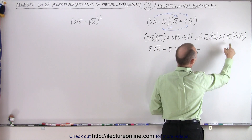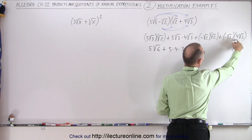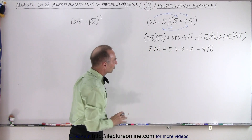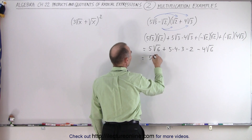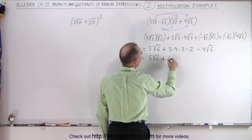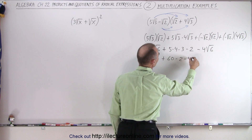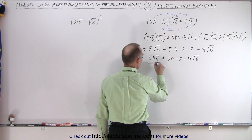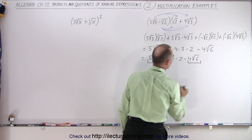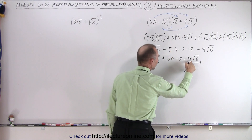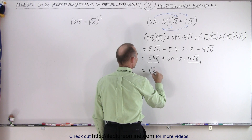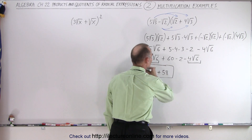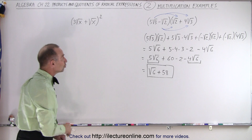And here we have a negative and the square root of two times the square root of three, which is the square root of six, and a four, so that's negative four times the square root of six. Now simplifying: we have five times the square root of six plus 60 minus two and minus four times the square root of six. Combining like terms: five of the square root of six minus four gives us one times the square root of six, and 60 minus two gives us 58 — that is the resulting product of those two binomials.